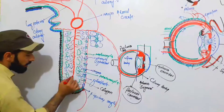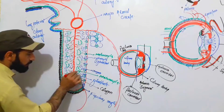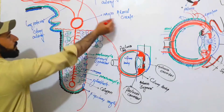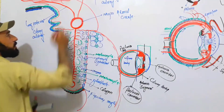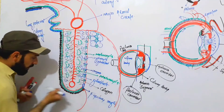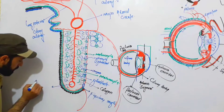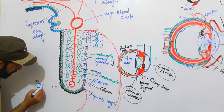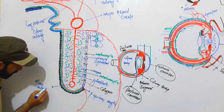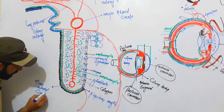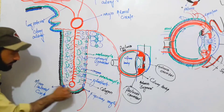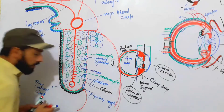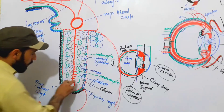At the pupillary margin, these branches will make the minor circle. So the major arterial circle is present in the ciliary body, and the minor arterial circle is present in the iris.